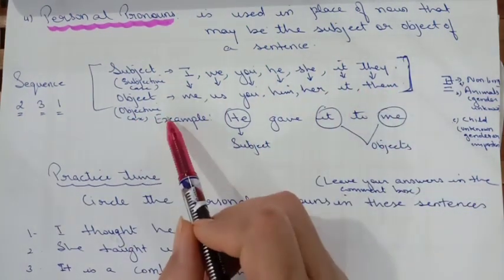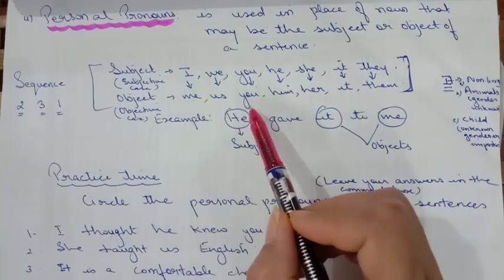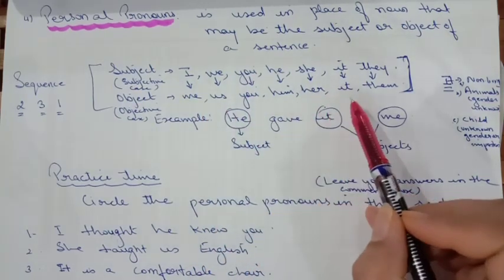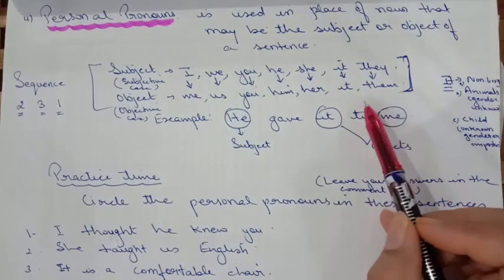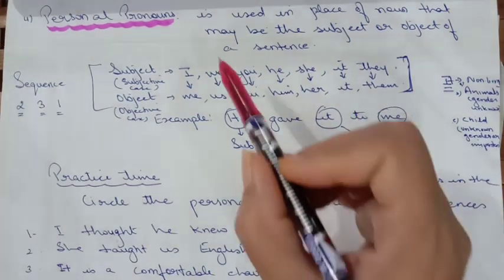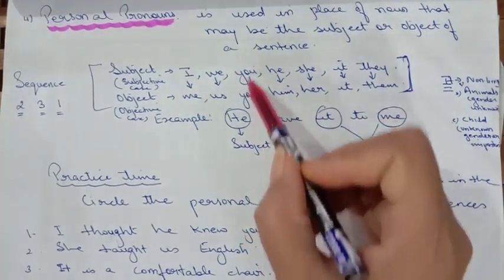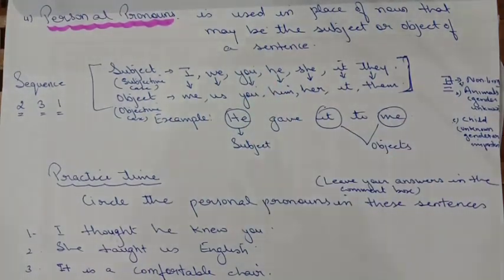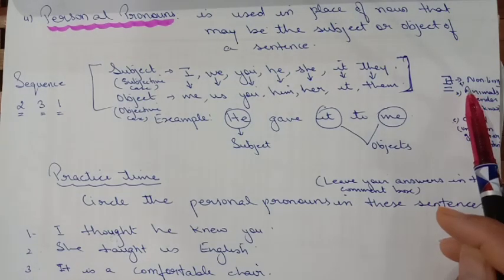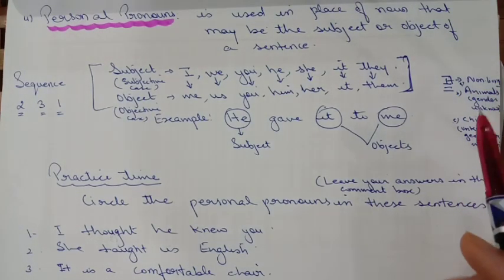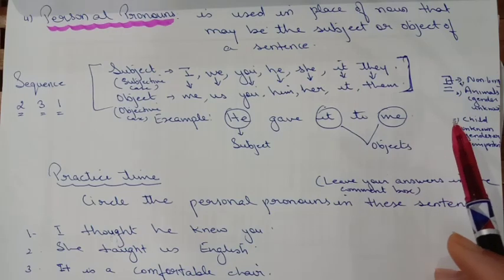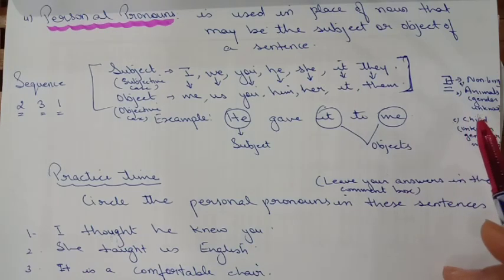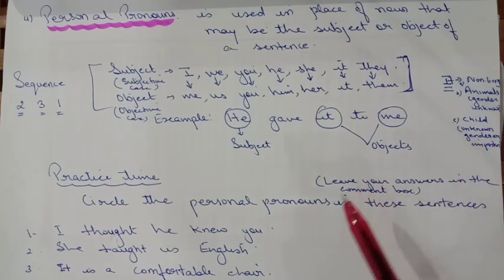The objective case pronouns are: me, us, you, him, her, it, them. Don't get confused — for both subject and object, 'you' remains the same. Now, 'it' is used for non-living things, for animals when gender is not known, and for a child also when you don't know the gender. Then you can use 'it.'